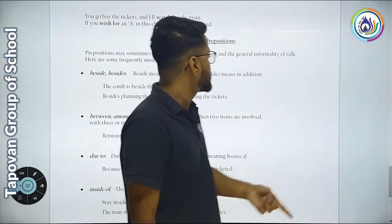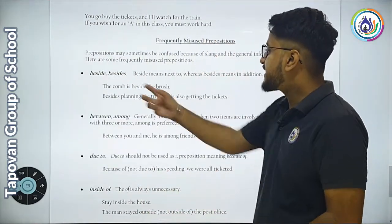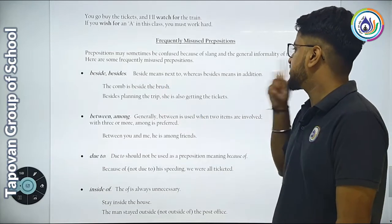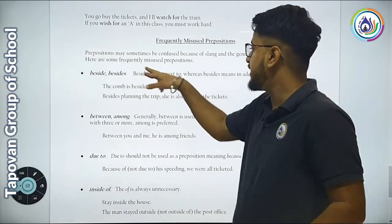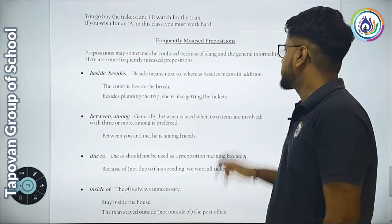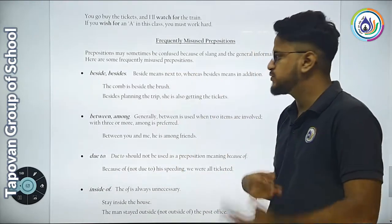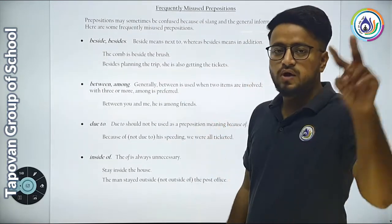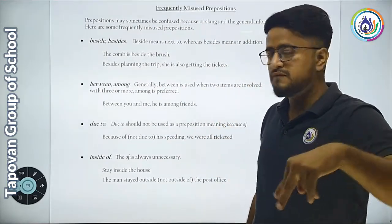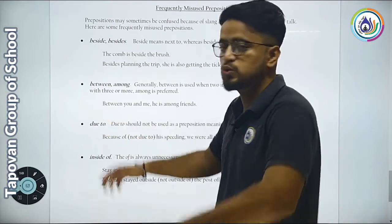Frequently misused prepositions. Beside means next to, whereas besides means in addition. Between is generally used when two items are involved. Among is used when three or more items are involved.